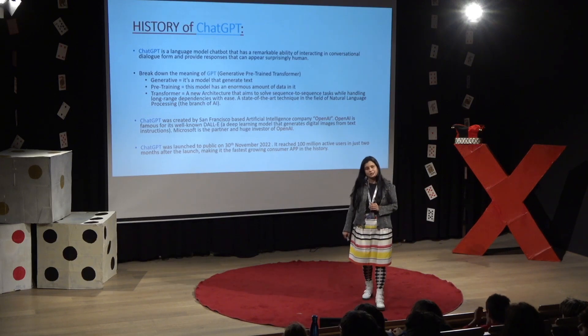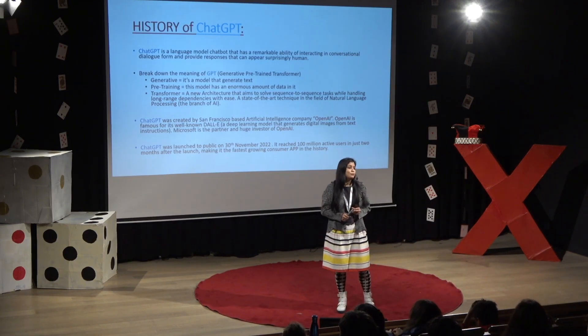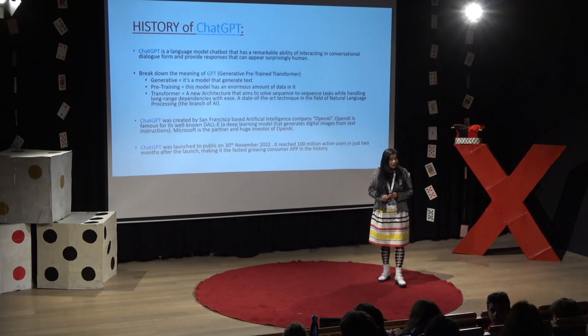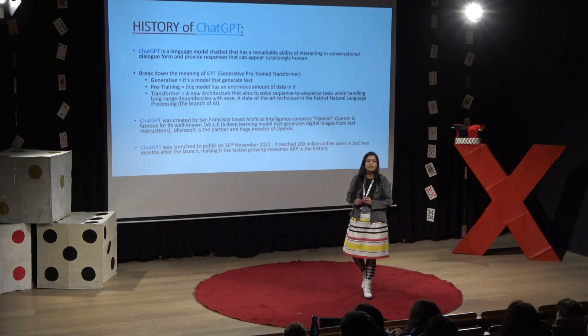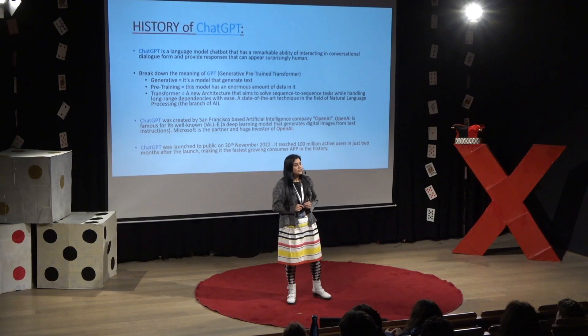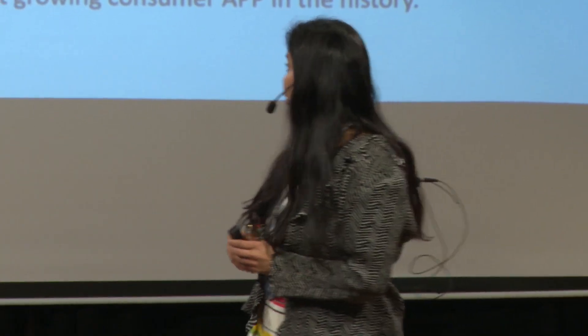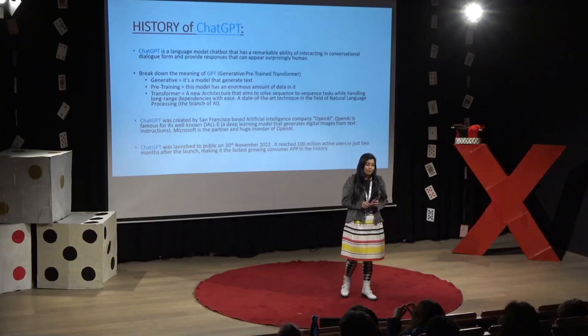ChatGPT was created by a San Francisco-based company called OpenAI. They are already famous for the DALL-E model, which takes text instructions and converts them into digital image forms. Now they have come up with ChatGPT, which was launched to the public on 30th November 2022. It reached 100 million users in just two months, making it the fastest growing app in history.